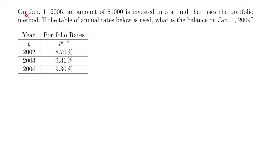Here's our second example. On January 1st, 2006, an amount of $1,000 is invested into a fund that uses the portfolio method. If the table of annual rates below is used, what is the balance on January 1st of 2009? Just like the previous example, note when the original investment is made: 2006. But looking at our table of portfolio rates, notice we don't actually have a rate for 2006 — the year column shows 2002, 2003, 2004, with no 2005 or 2006.